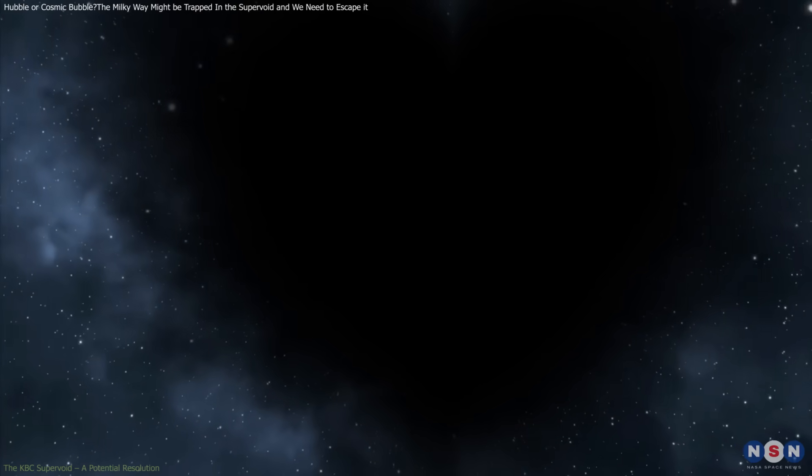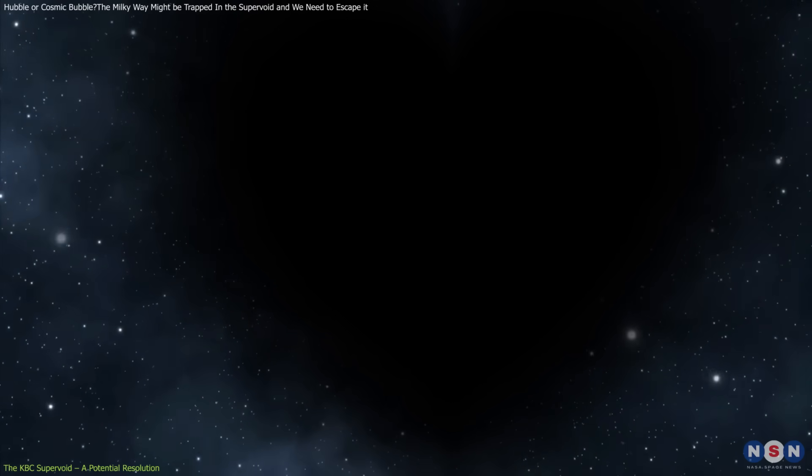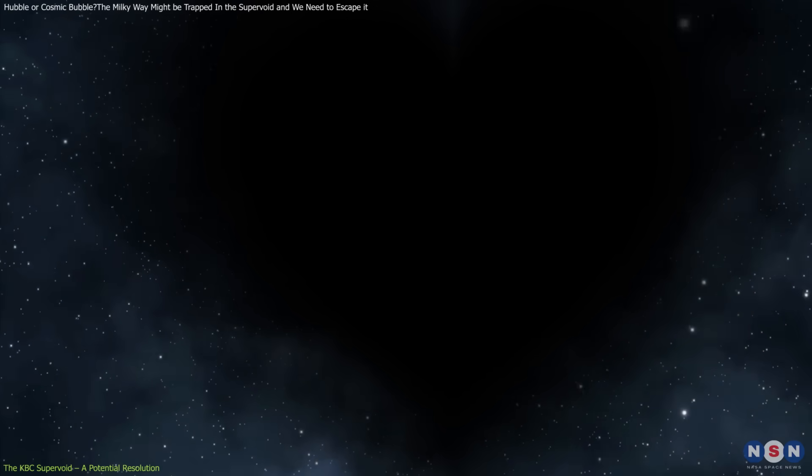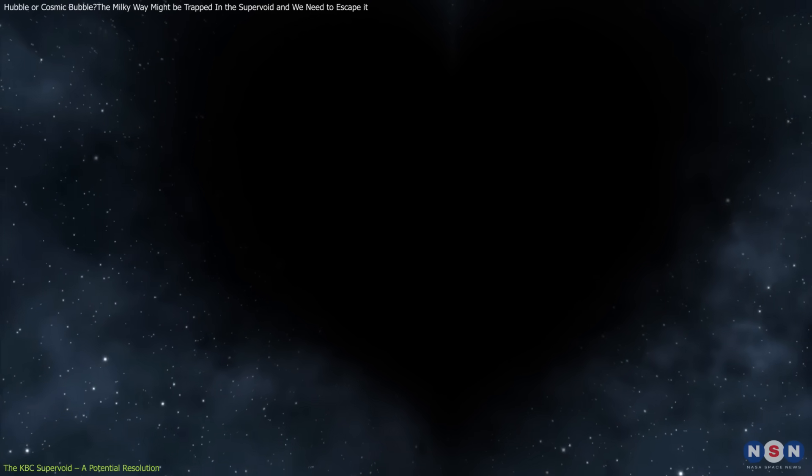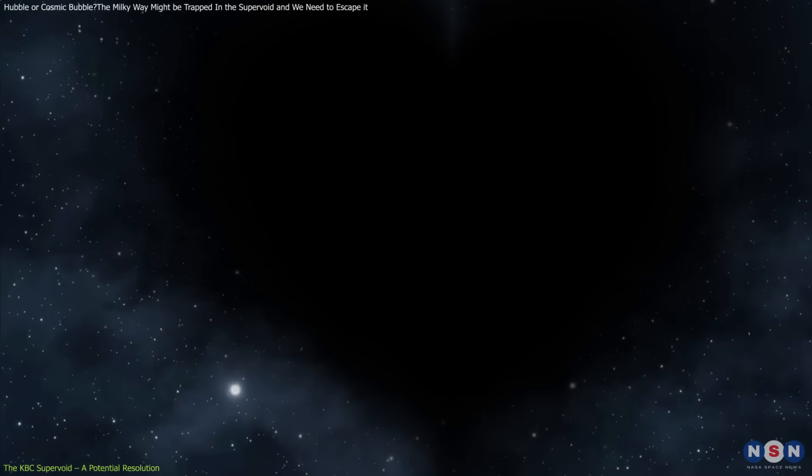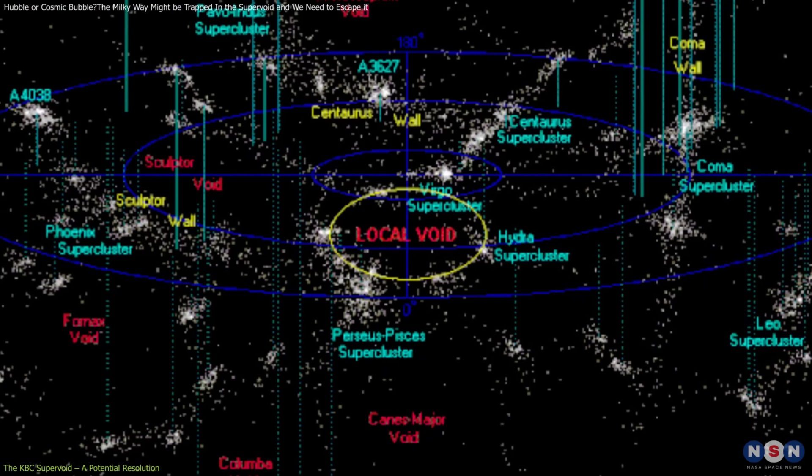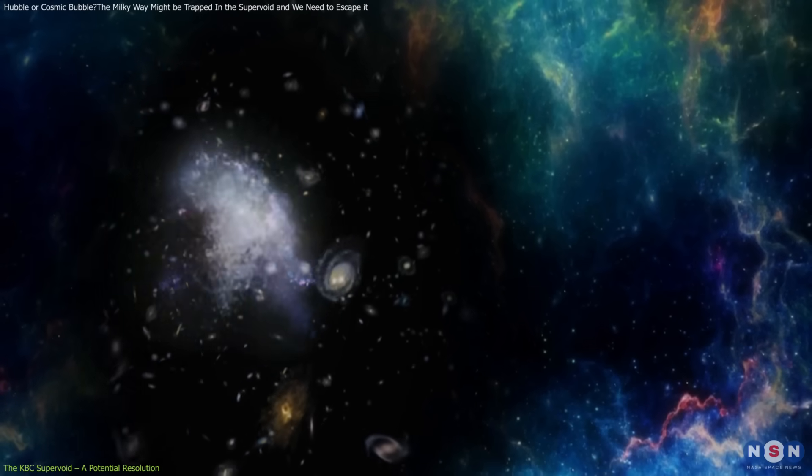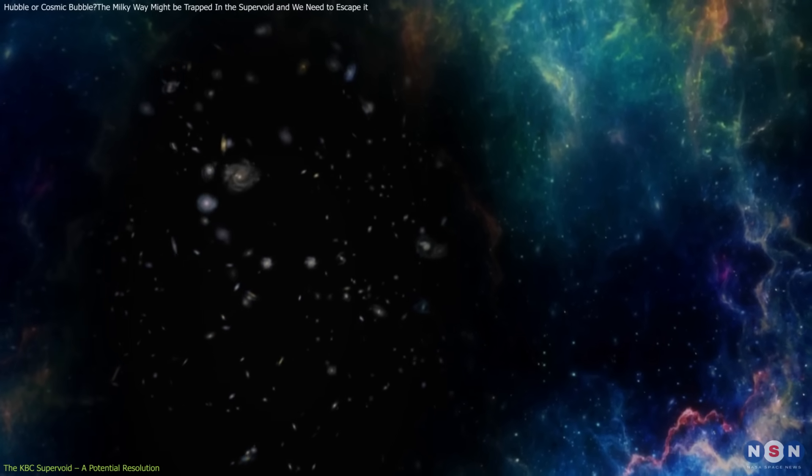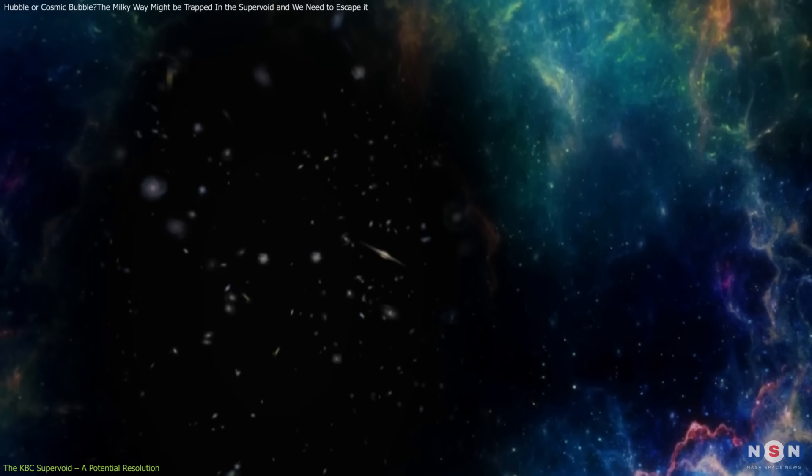The KBC supervoid, discovered in 2013, is a colossal underdense region roughly 20% less dense than the cosmic average. Spanning about 1 billion light-years, it is centered near the Milky Way. This positioning could explain why local measurements of the Hubble constant appear inflated.